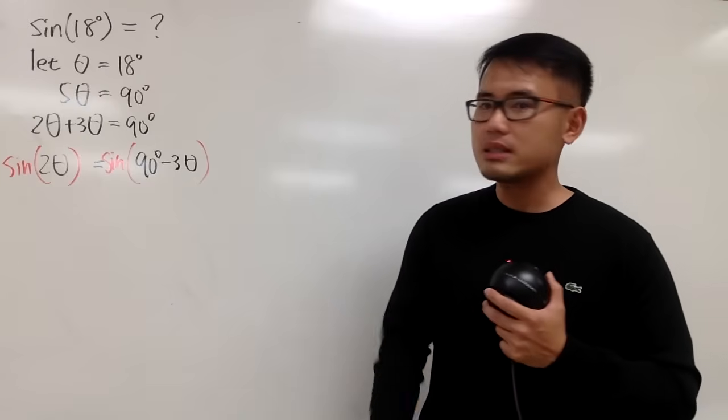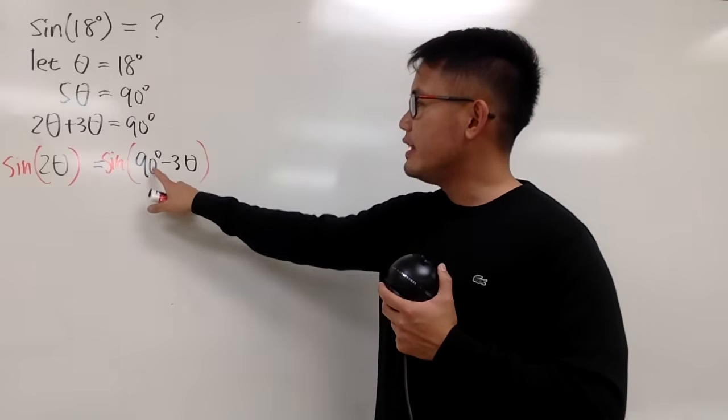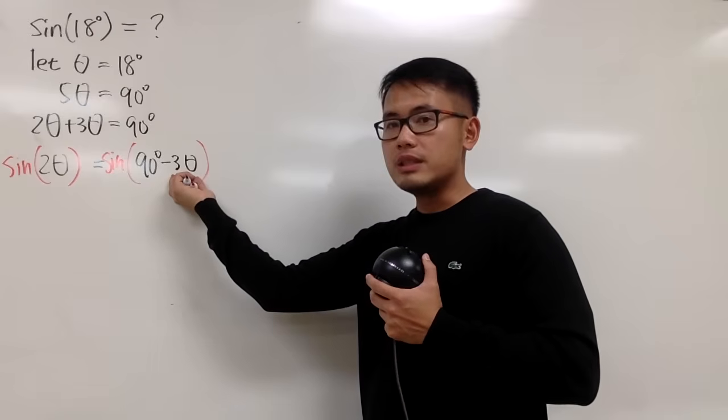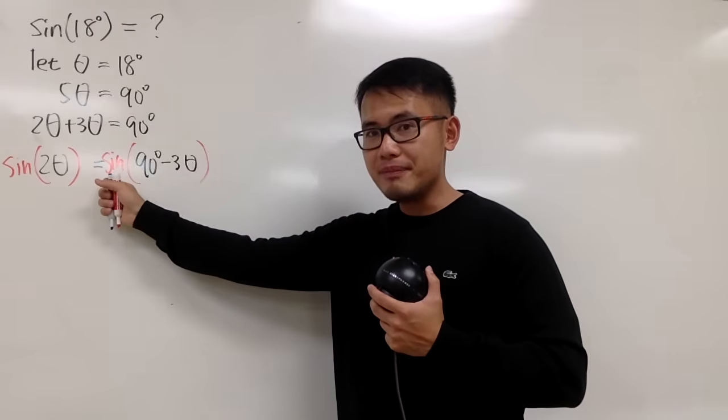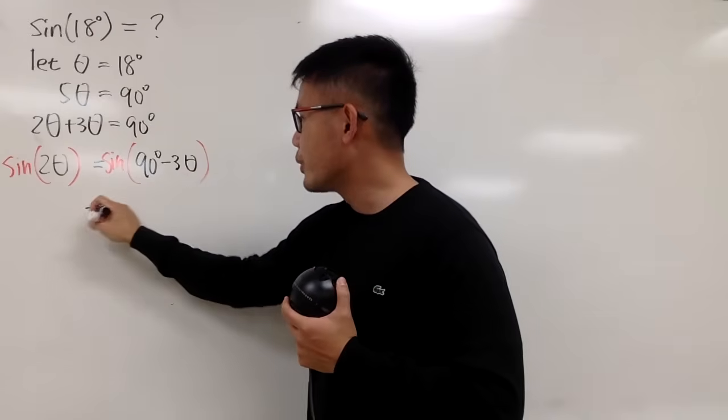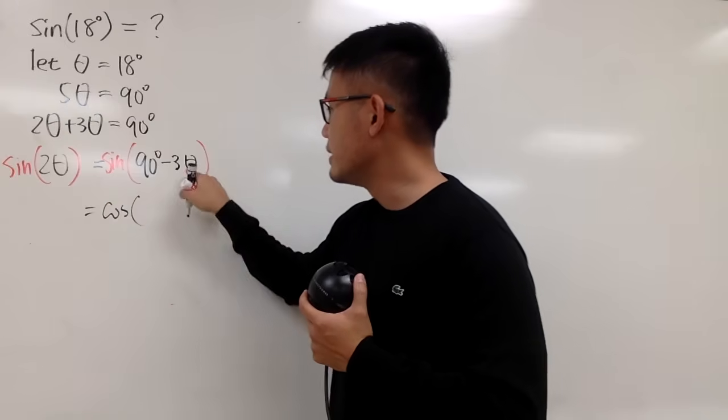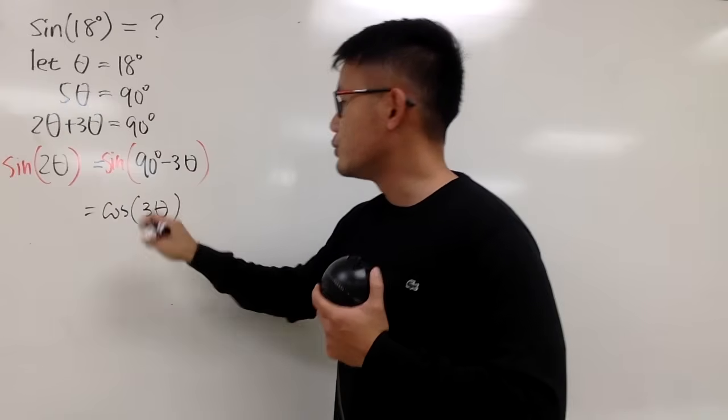And here's the best part. Whenever we have 90 degrees minus whatever this angle is, instead of sine, this is exactly equal to cosine of this angle, which is just 3 theta.